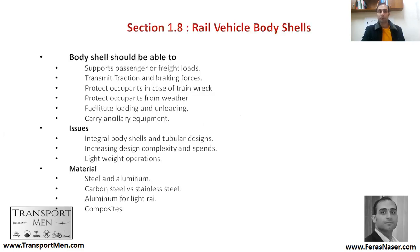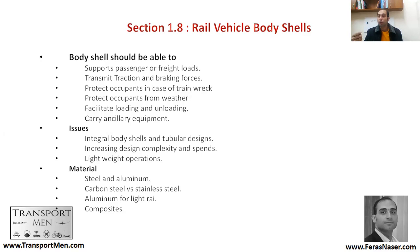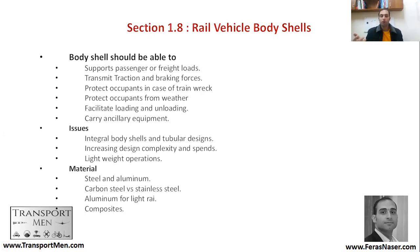Section 1.8 talks about rail vehicle body shells — the body of the vehicle. Its functions include supporting passengers or freight loads, transmitting traction and braking forces, protecting occupants in case of a train wreck, protecting from weather, and facilitating loading and unloading. It can be an integral body shell or a tubular design. Materials used are mainly steel and aluminium; aluminium is being used more due to its lighter weight, and composites are sometimes used for light rail.